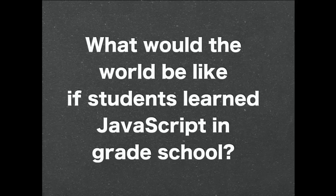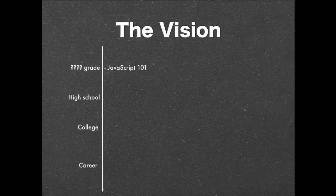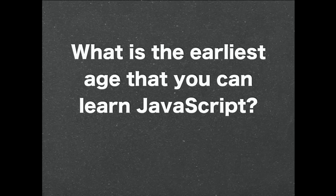So today I want to talk about a hypothetical world — what it might look like. In this world, every student would learn JavaScript in grade school. If we're going to paint a picture of that world, we might make a timeline and say, in a certain grade, that is when they would learn JavaScript 101. So what's the earliest age you can learn JavaScript?